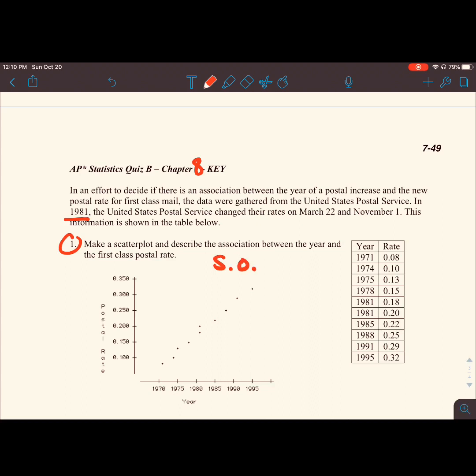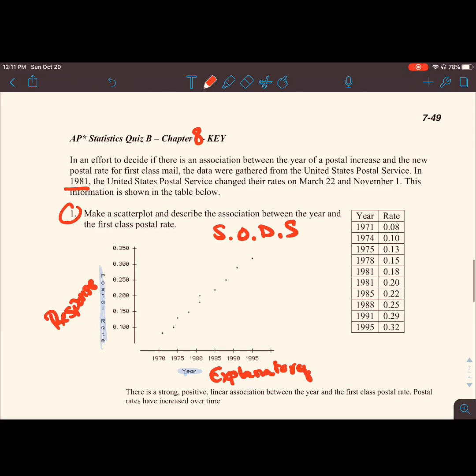The first thing you have to do, make a scatterplot, describe the association between the year and the first-class postal rate. Shape, outliers, direction, spread - other key things to highlight. We have our postal rate and we have our year. Our year is our explanatory variable and our postal rate is our response variable or our predicted value. When we're making our model, it's important that we have postal rate hat equals B sub 0 plus B1 times our year. That's what our model is going to be.